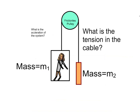Once we've calculated the acceleration, the next question is what is the tension in the cable? If you know the acceleration of the system, you can consider one body by itself. So let's consider the counterweight.